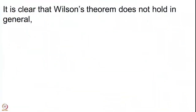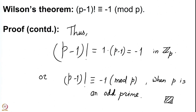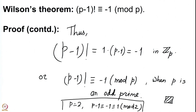We have such a nice result, and you may ask what happens in general. Clearly Wilson's theorem does not hold in general. If you put p = 2, then (p−1)! = 1! = 1 = −1 mod 2, so it does hold trivially. We can say that (p−1)! ≡ −1 mod p holds for all primes.